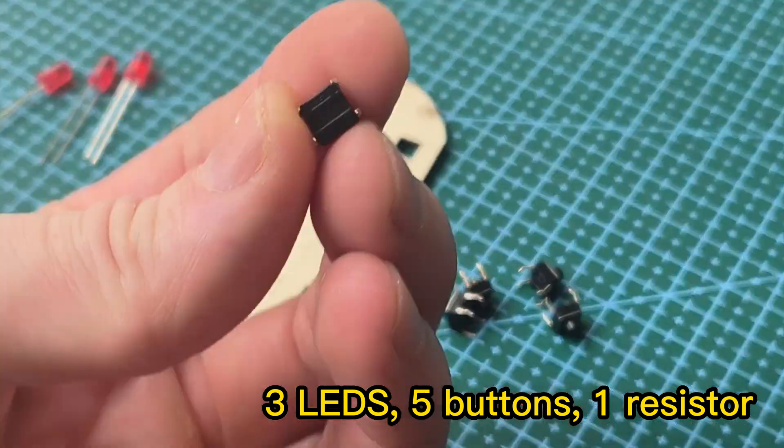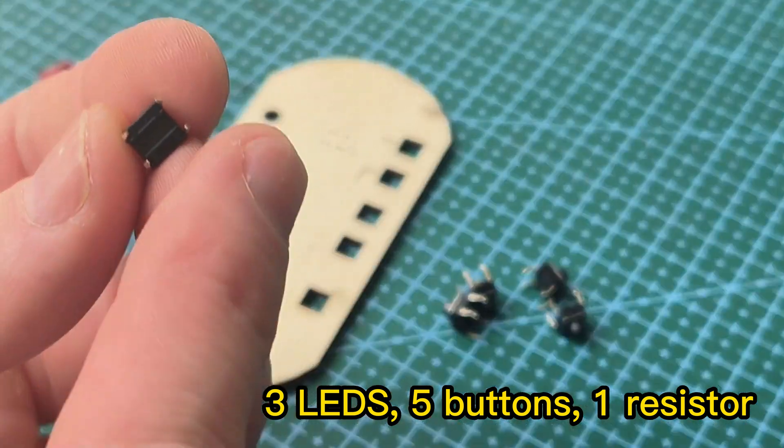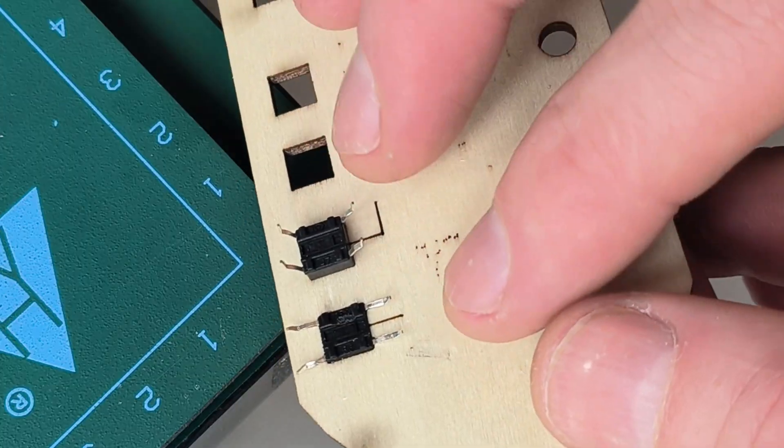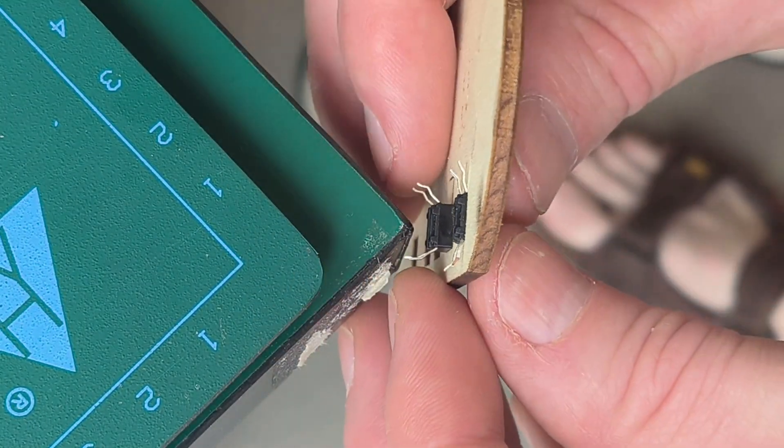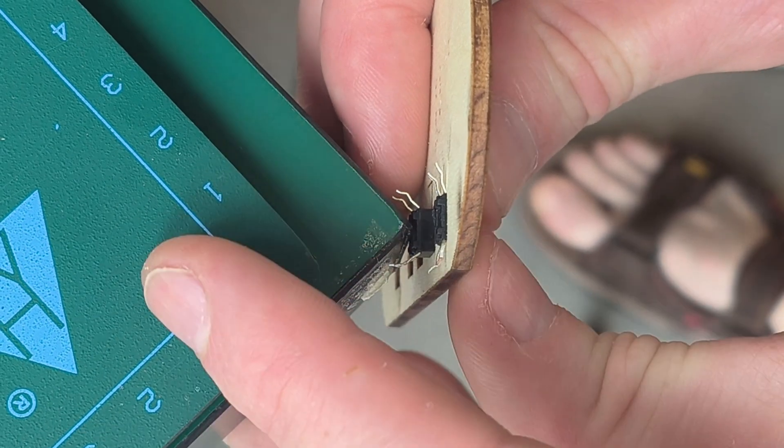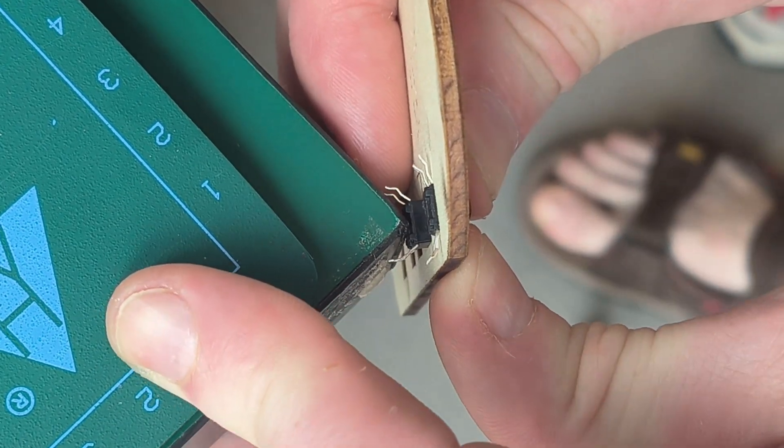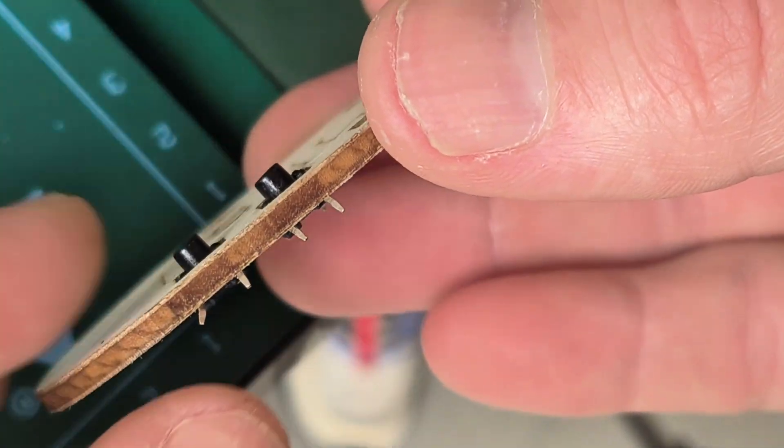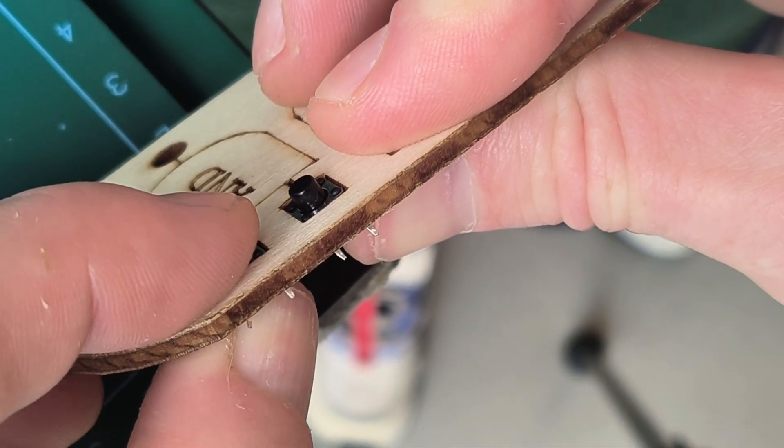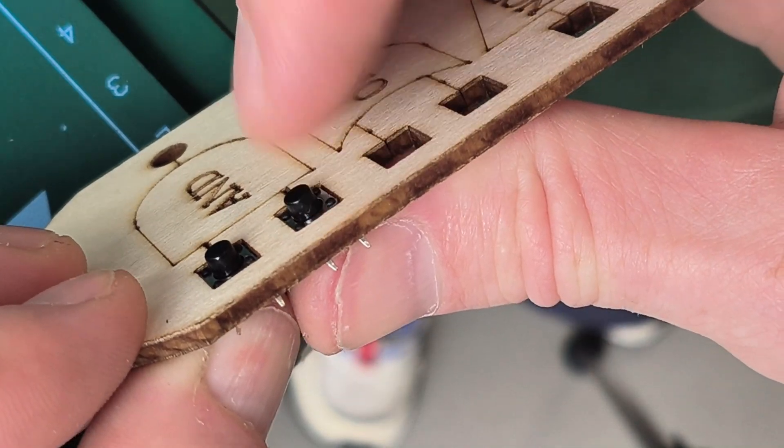The materials that you need are three LEDs and five push buttons and one 2K ohm resistor. I push in the push buttons like this and using the side of a table, you can use that to help you push in the buttons. Again, this project doesn't need any glue. It should be in there nice and firm so when you push on it, the buttons don't fall out.